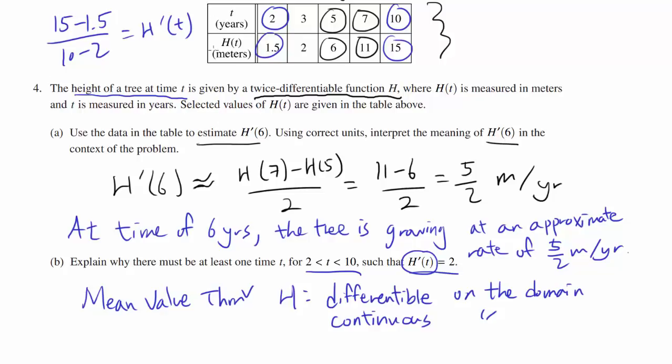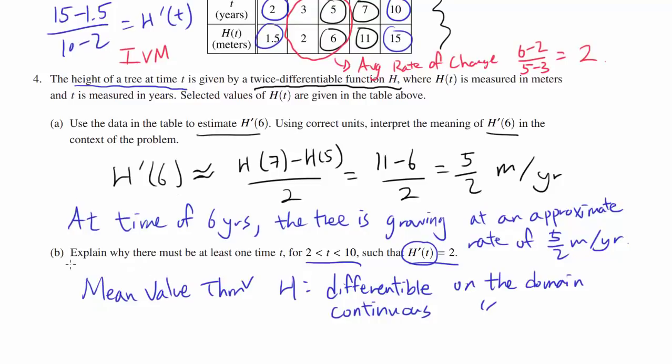One way of going about this is trying to find some rates and maybe trying to incorporate Intermediate Value Theorem. If you can find a rate less than 2, more than 2, and if you can somehow connect them, maybe that's an acceptable answer. But in my opinion, easiest way is to just look at this part. Because from t=3 to 5, our average rate of change is (6-2)/(5-3), or 4/2, or simply 2.